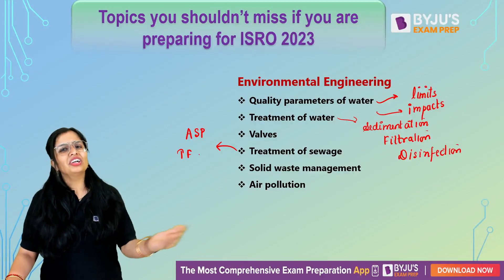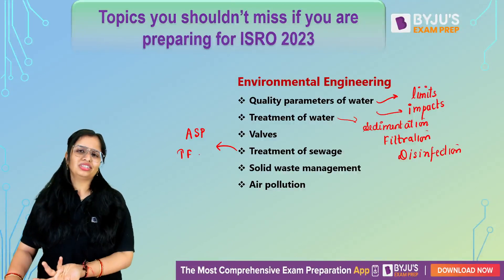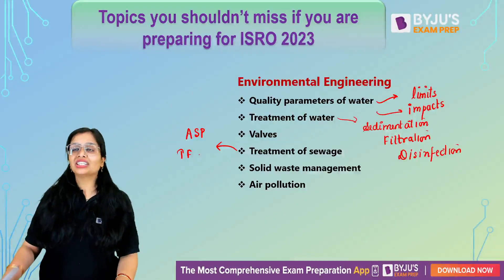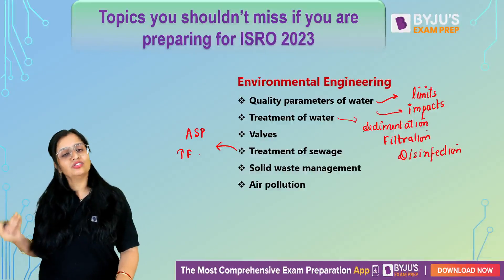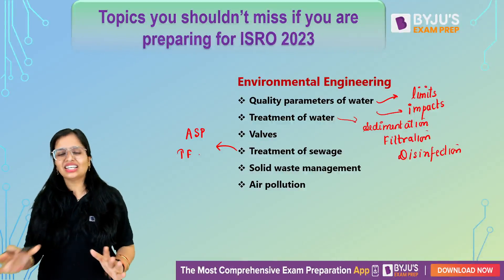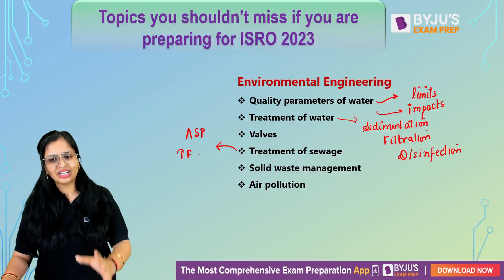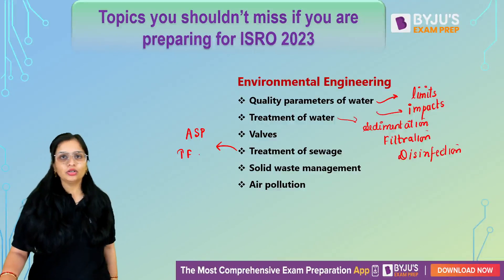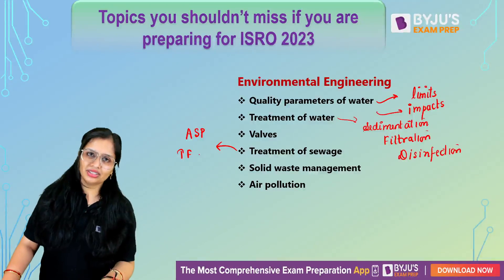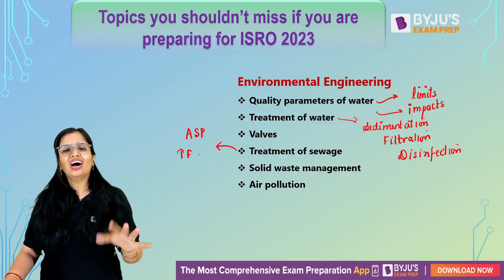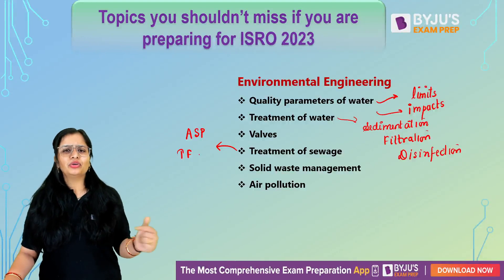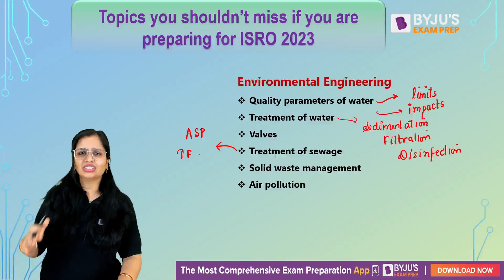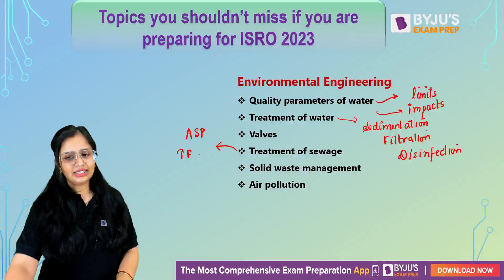For air pollution — what are primary pollutants and secondary pollutants, what is the impact of high concentration of CO. You don't have to study entire air pollution theory, just these simple concepts along with plume behavior — when do you get a lofting plume, when do you get a fumigating plume. Just that.